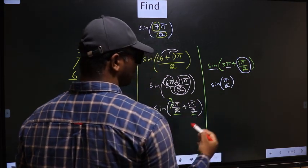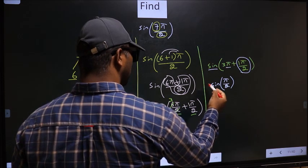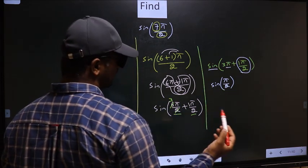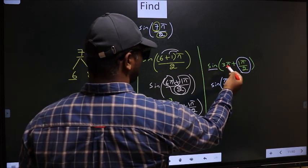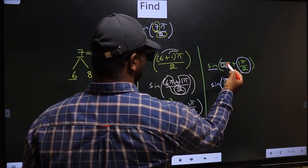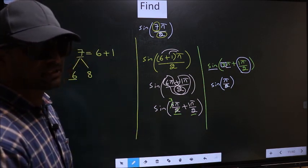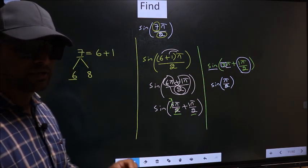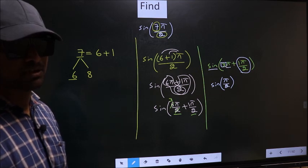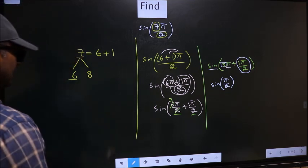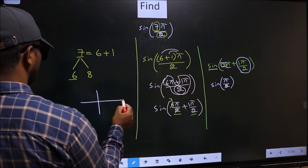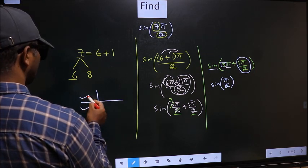Now the question is, will we get here plus or minus? To answer that, you should look at the number before π, which is 3. Here we have 3, and 3 is odd. And all the odd multiples of π lie in the second or third quadrant.